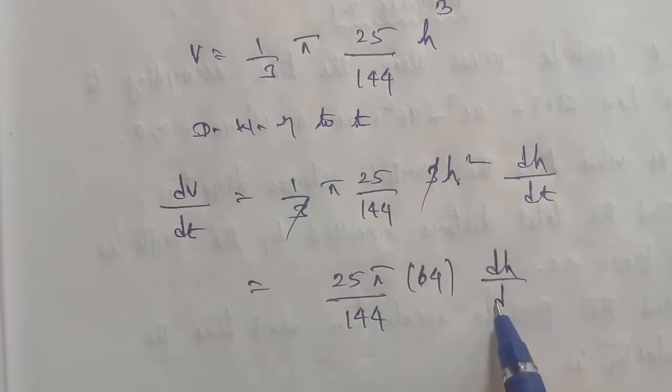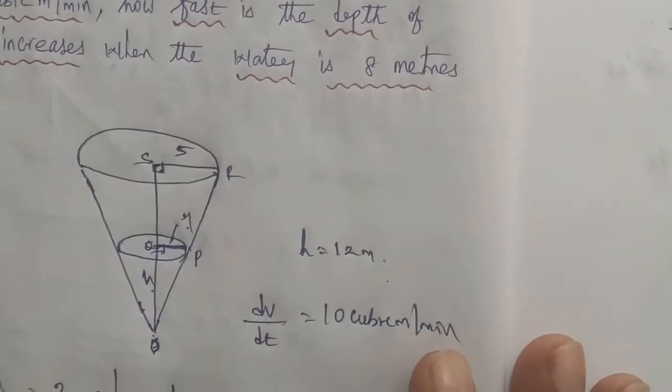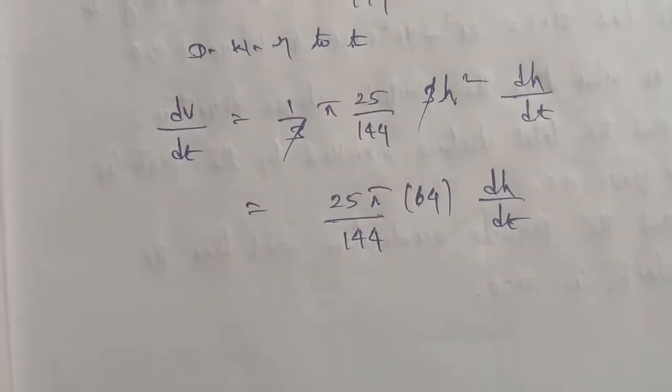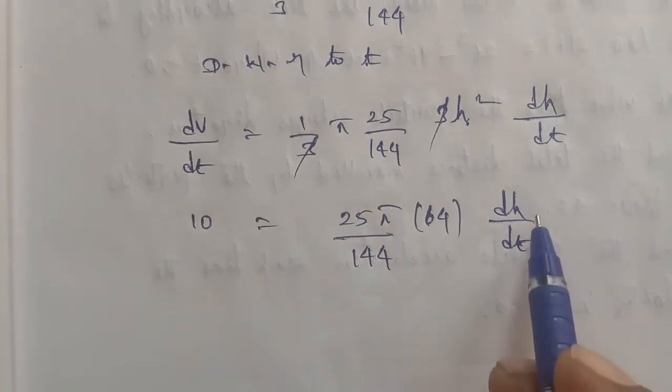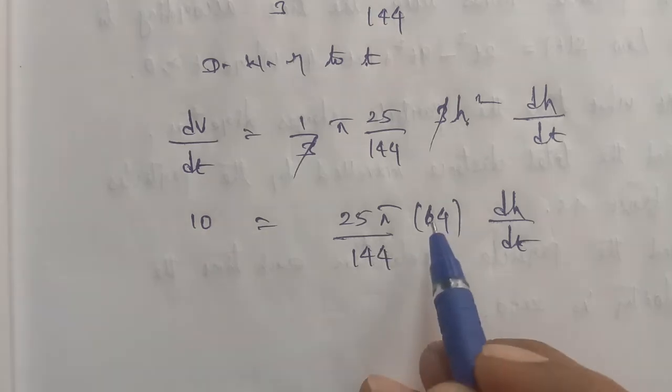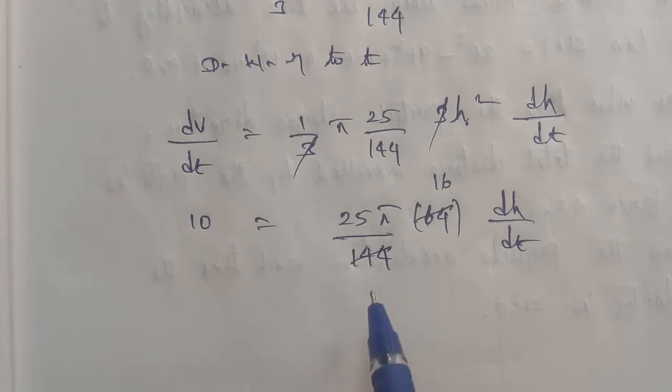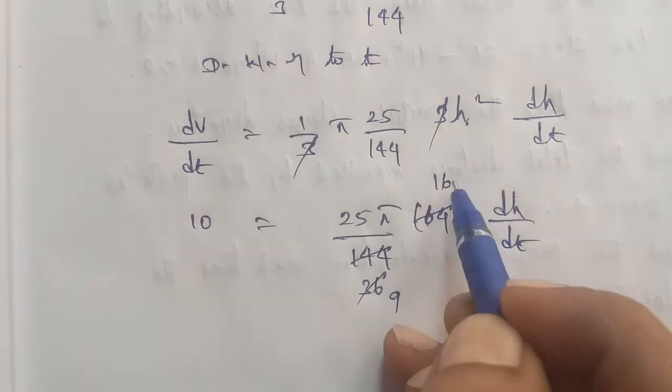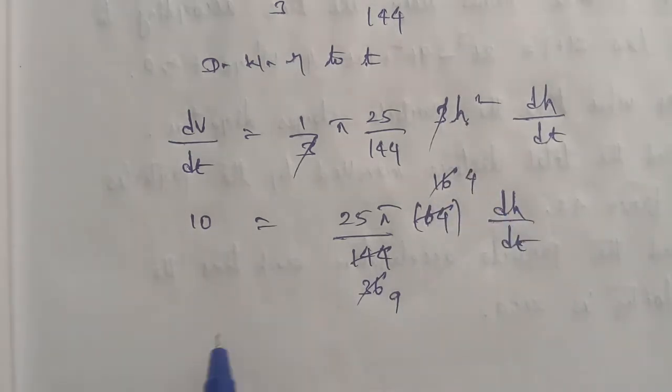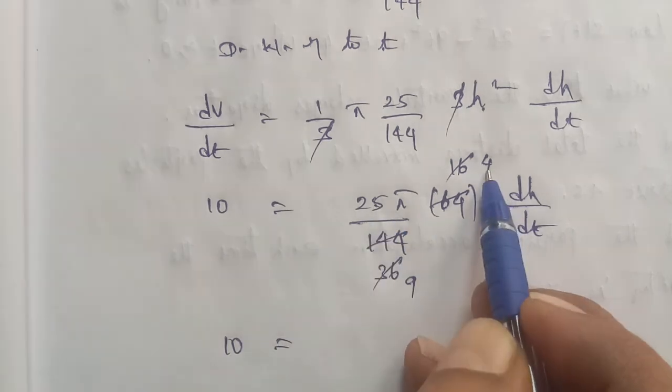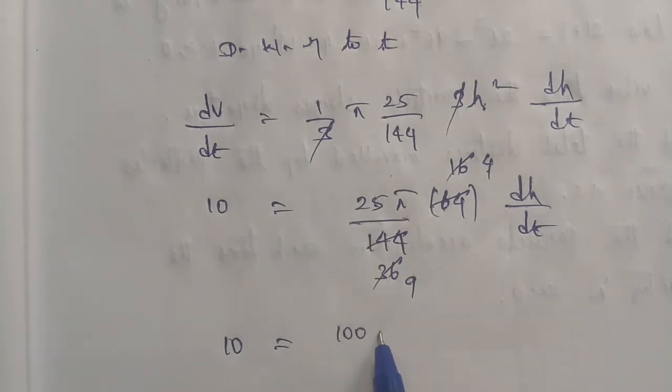Next, dv by dt value from question is 10. If we cancel, 4 goes into 64 sixteen times, 4 goes into 16 four times. Again 4 goes into 64, nine times. So 10 is equal to 25 into 4, so 25 into 4 is 100, divided by 9 into dh by dt.